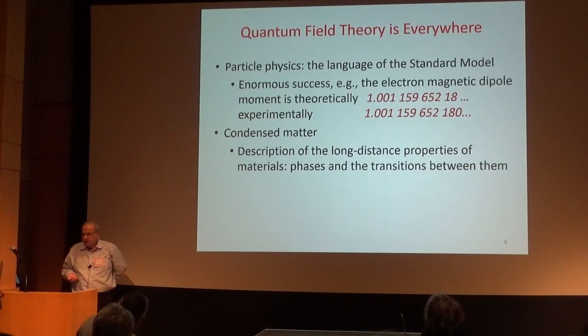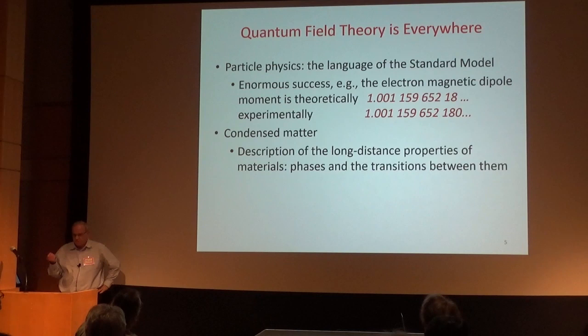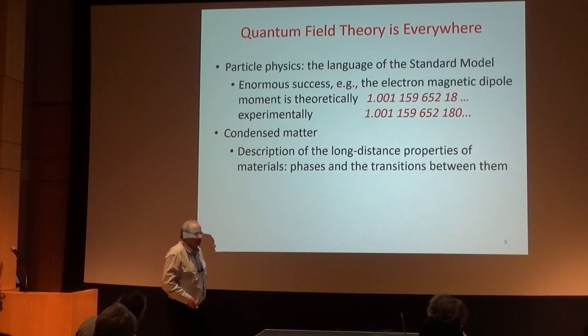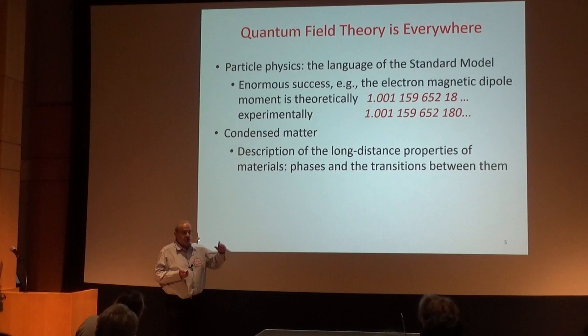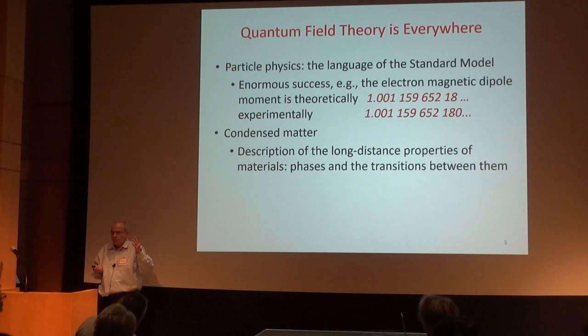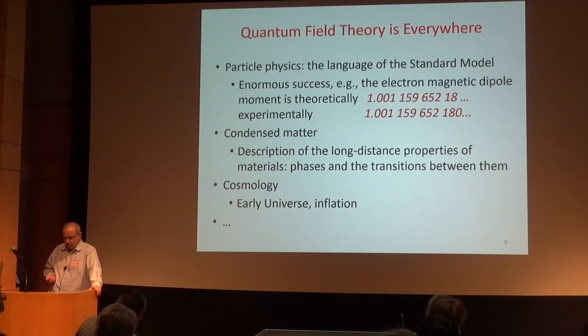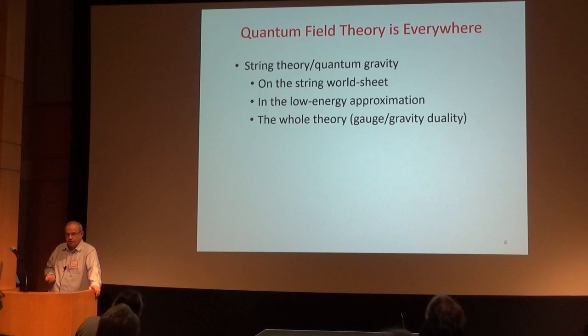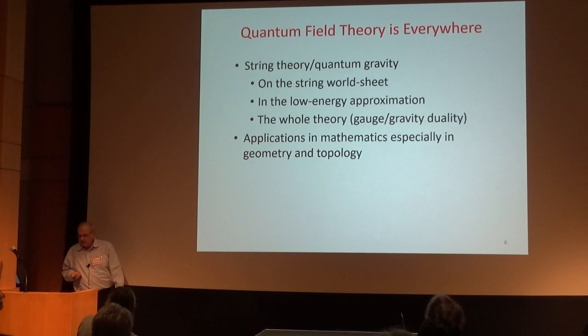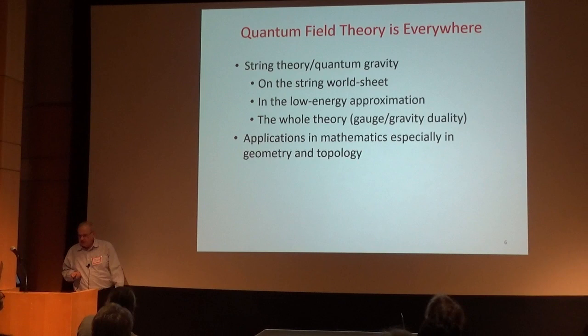In condensed matter physics, the same mathematical structure — the same ill-defined mathematical structure — gives us the description of long-distance behavior of materials: phases such as magnets, superfluids, semiconductors, and the phase transitions between them. It's surprising that the same mathematical language controls different phenomena at totally different length scales for totally different reasons. QFT also appears in cosmology describing the early universe and inflation, and in string theory and quantum gravity, as well as having applications in mathematics.